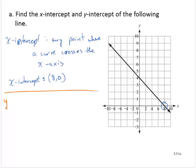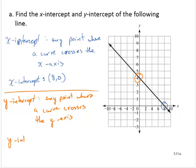In general, a y-intercept is any point where a curve crosses the y-axis. And so in this case, our y-intercept is 0, 4.